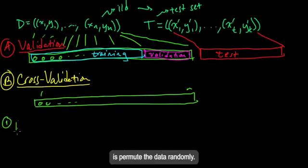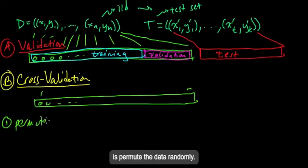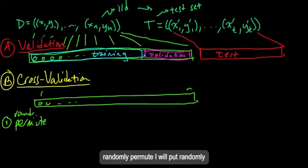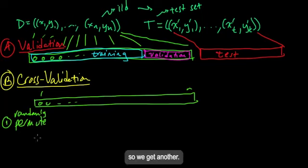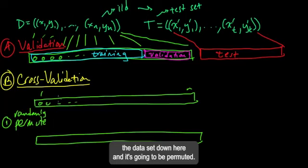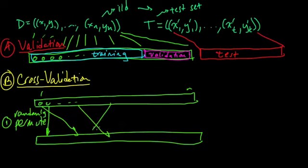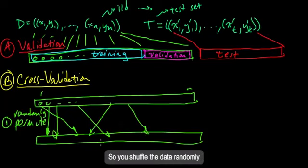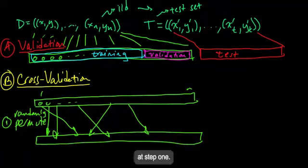So what is cross-validation? Well, let's take our data set D here. Let's redraw this down here again. So this is our whole data set, one to N. And the first step in cross-validation, let's keep that in green: Step one is randomly permute the data. So you shuffle the data randomly.